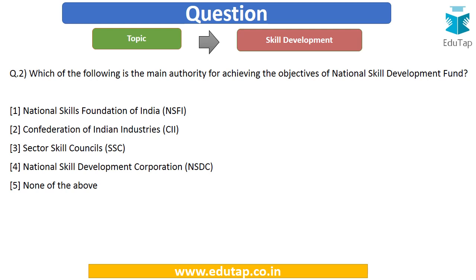The next question: which of the following is the main authority for achieving the objectives of National Skill Development Fund? The options are: (A) National Skills Foundation of India, (B) Confederation of Indian Industries, (C) Sector Skills Councils, (D) National Skill Development Corporation, or (E) none of the above.